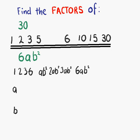So that's our first list. 1, 2, 3, 6. ab squared, 2ab squared, 3ab squared, and 6ab squared.